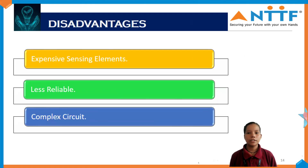Some disadvantages of the transducer are: the sensing element of the transducer is expensive, it is less reliable, and the circuit is complex.